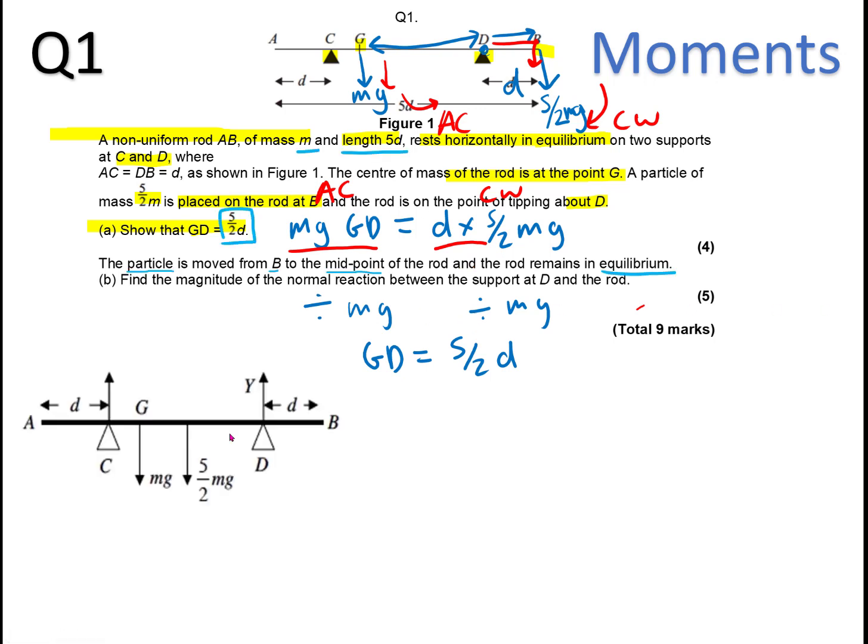So let's have a look at part B. The particle is moved from B to the midpoint of the rod, so that's just moved exactly here, that's the particle. And the rod still remains at equilibrium. Find the magnitude of the normal reaction between the support at D and the rod. So we're finding this, N.